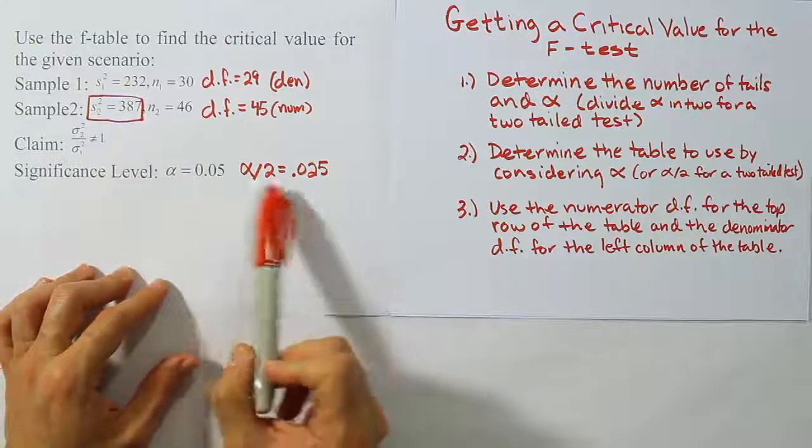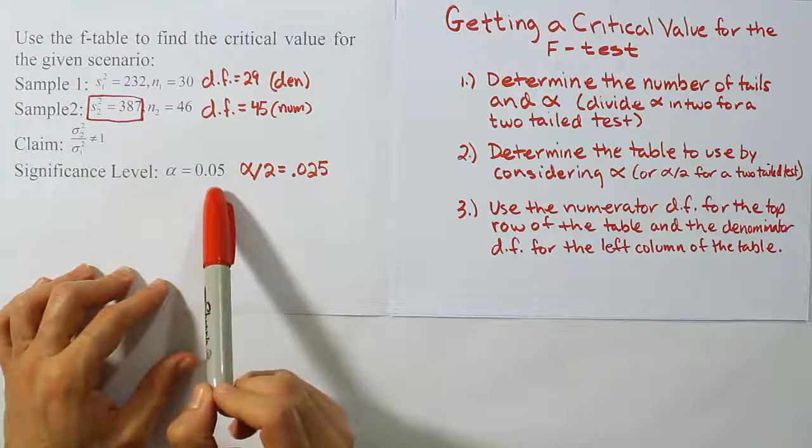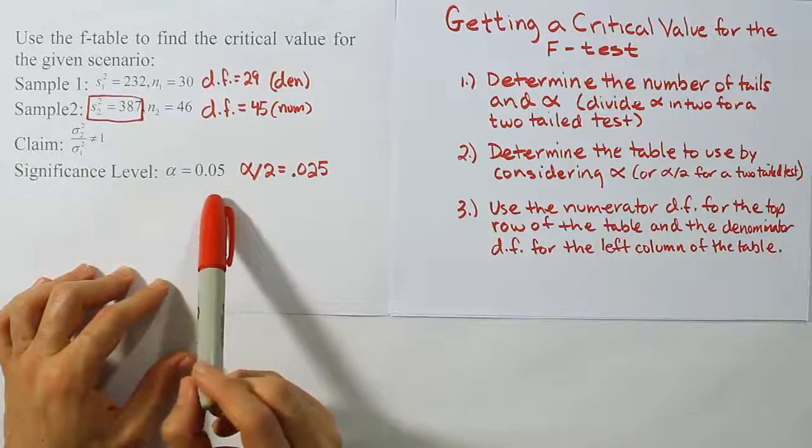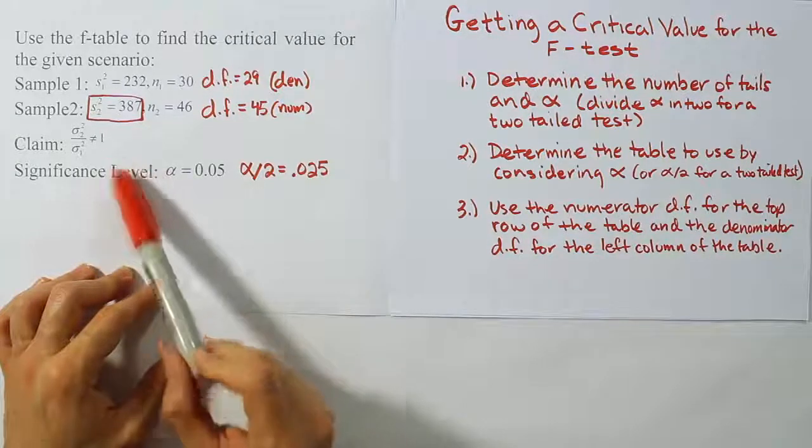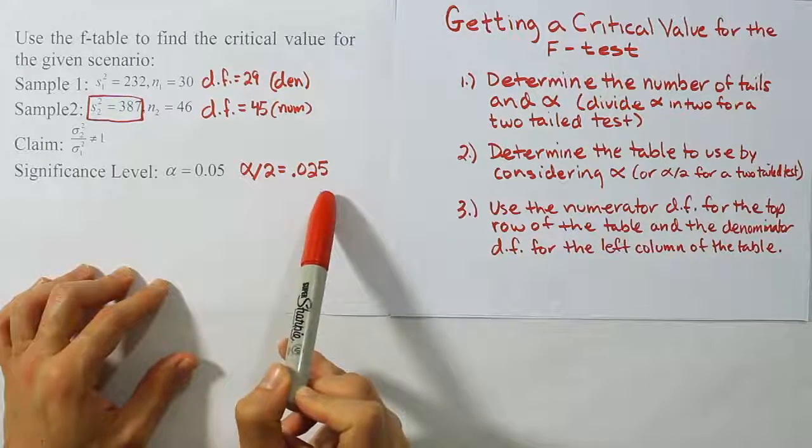That's very important because a lot of people will make that mistake. They'll overlook the fact that it's a two-tailed test and they'll look up their critical value on the 0.05 table. But that's not correct. Because it's a two-tailed test, we have to chop this alpha in half and we have to look at the 0.025 table instead.